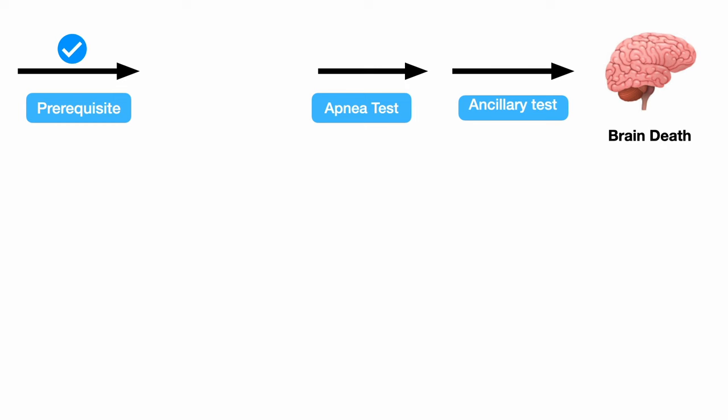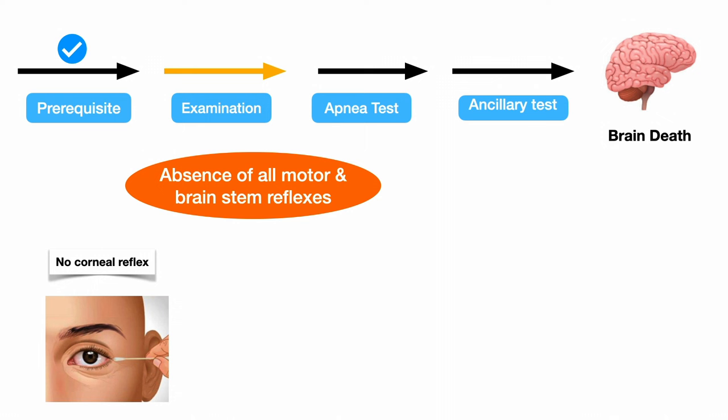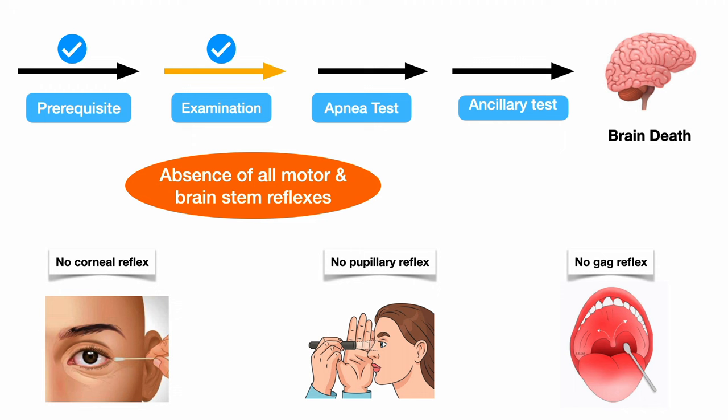Once prerequisites are met, the next step is examination. This looks for the absence of all motor and brainstem reflexes, such as no corneal reflex, no pupillary reflex, and no gag reflex.